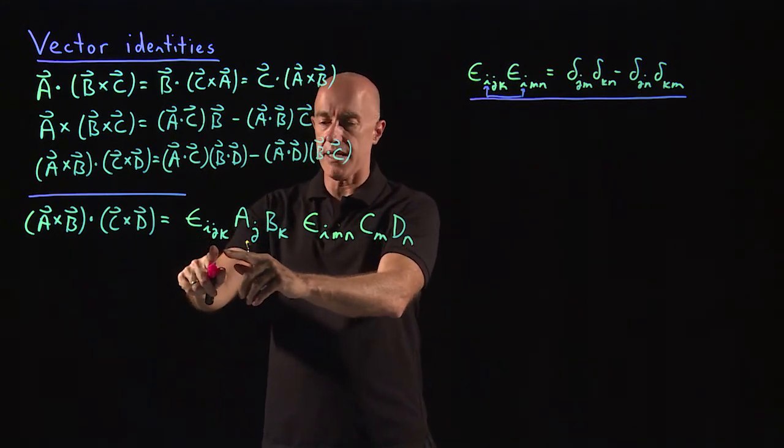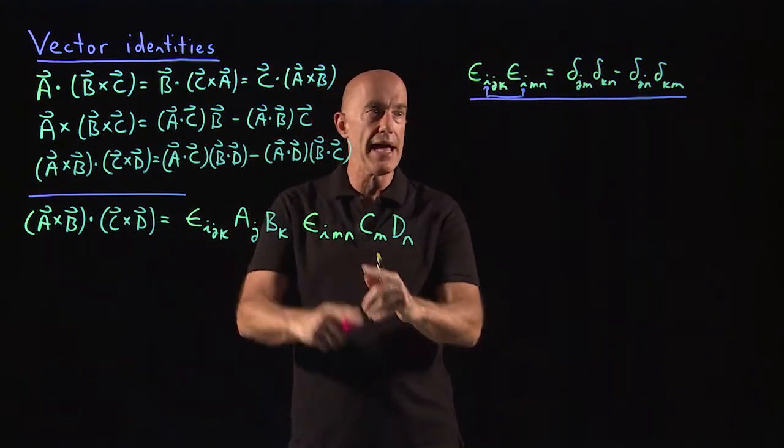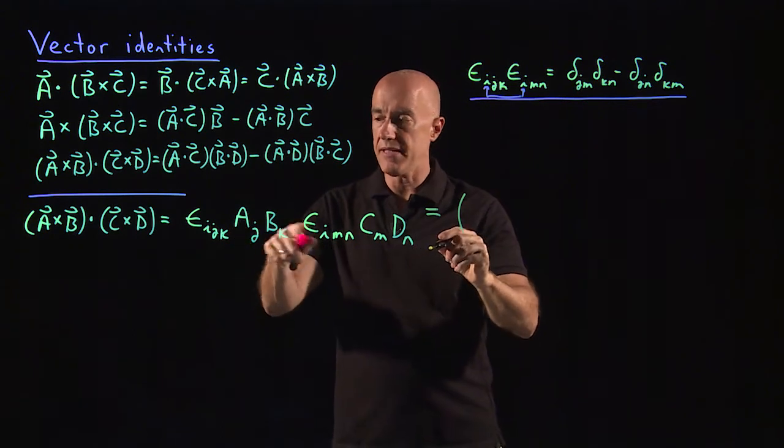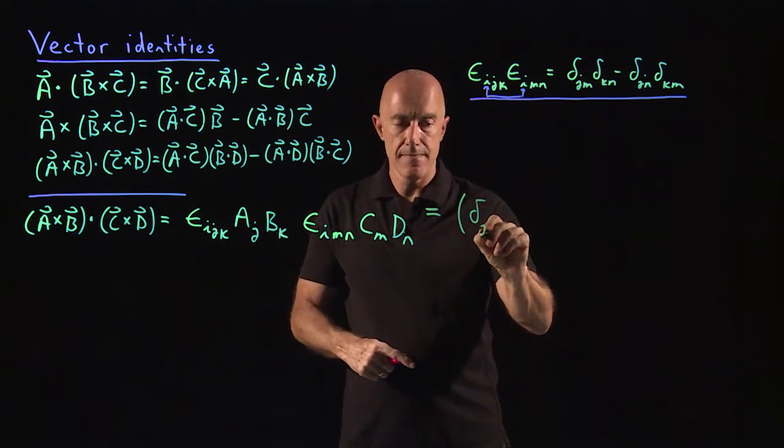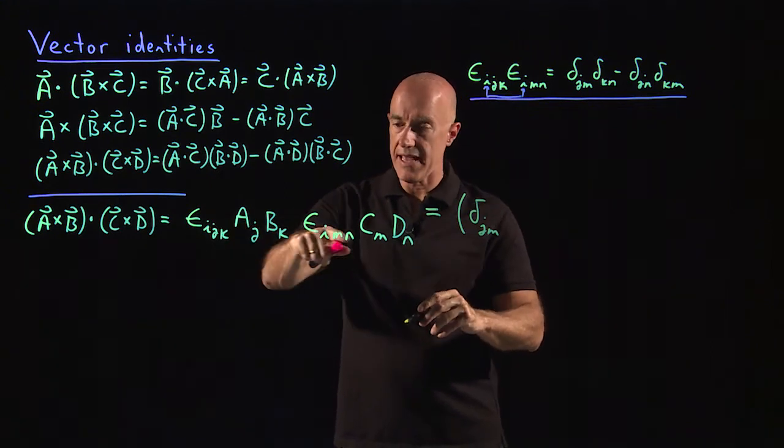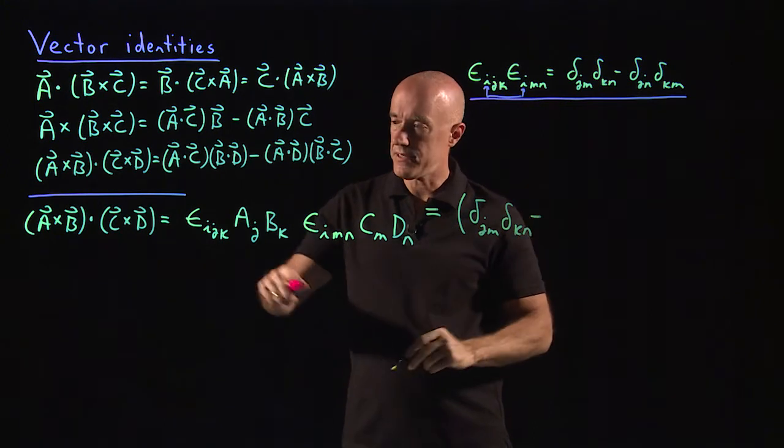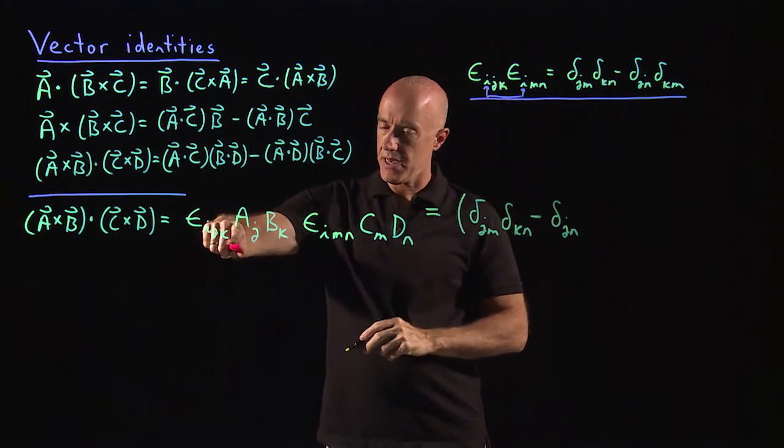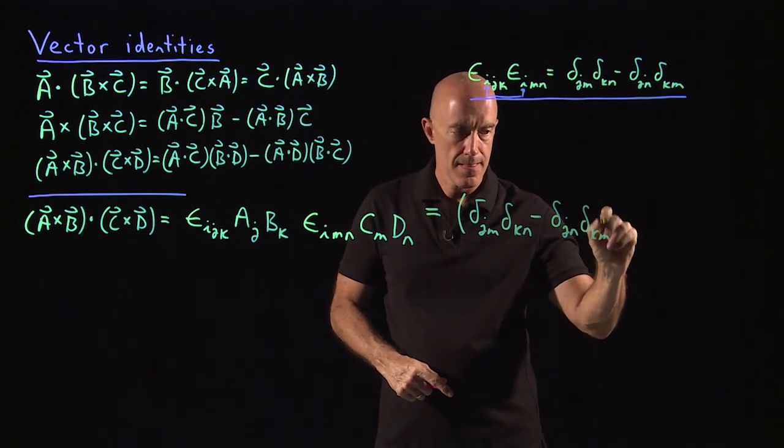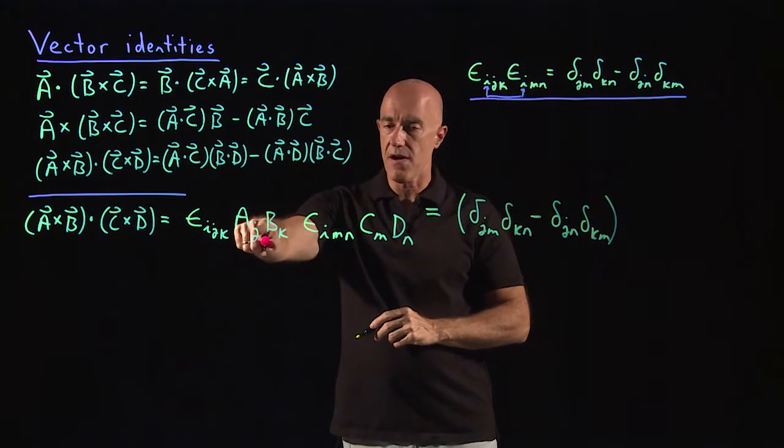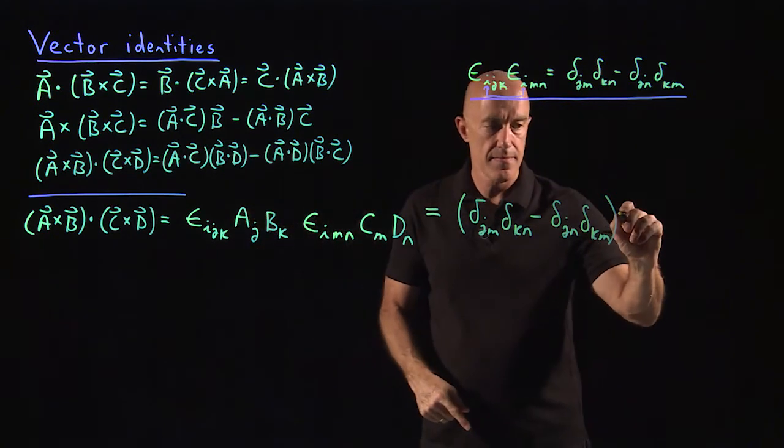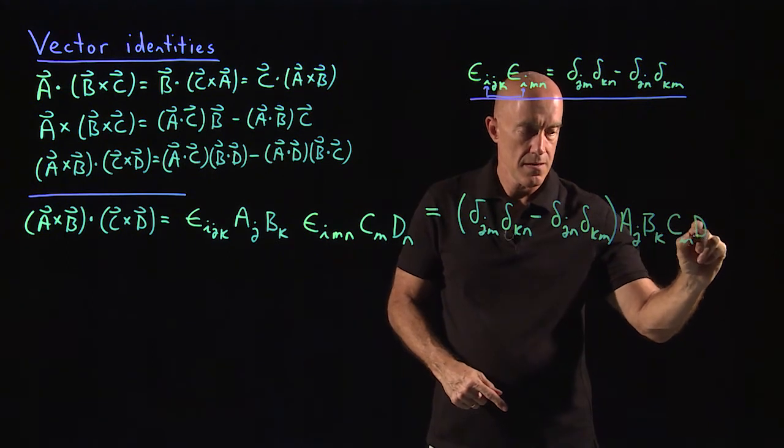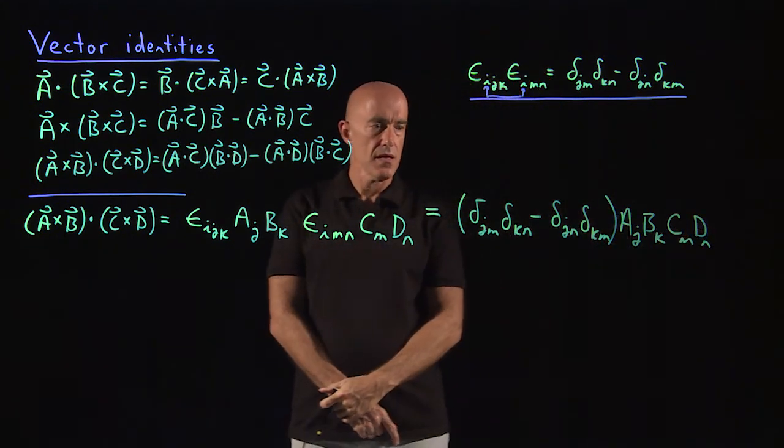So now we have, we see we have an epsilon_ijk, and we have an epsilon_imn. So we can make use of this identity. So the two epsilons become delta_jm delta_kn minus delta_jn delta_km. From our identity. And then we have four terms. a_j b_k and c_m d_n. So far, so good.